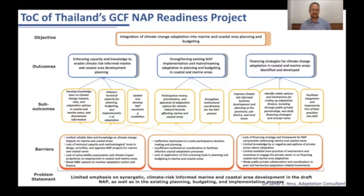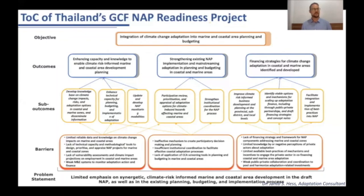You could then go into more detail and look at the three outcomes: enhancing capacity and knowledge to enable climate risk-informed marine and coastal area development planning; strengthening existing NAP implementation and mainstreaming adaptation in planning and budgeting in coastal and marine areas; and financing strategies. Afterwards you could dig further into the sub-outcomes and how they relate to specific barriers. I really hope that this elaboration on the theory of change provided you with an understanding of the concept and how it can effectively and concisely give a snapshot of a project, providing a clear narrative of what change you want to achieve and what core problem you want to address.